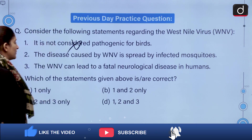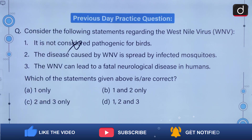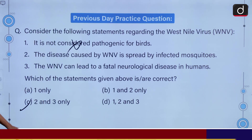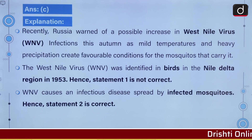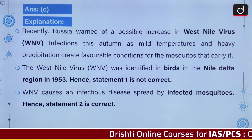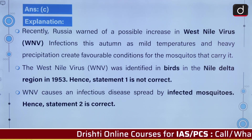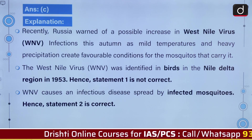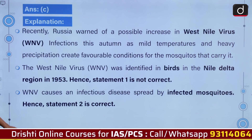The second and the third being correct, the first being incorrect. The correct answer is option C. Recently, Russia warned of a possible increase in WNV infections this autumn as mild temperatures and heavy precipitation create favourable conditions for the mosquitoes that carry it.